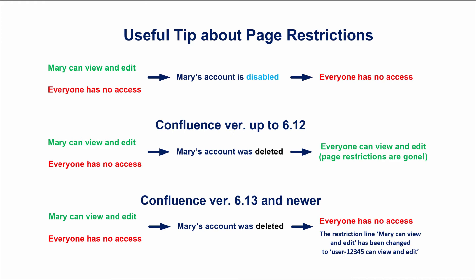If a user is listed as the only person who has access to the page and we disable their account, the page is still restricted and not accessible to anyone. Confluence remembers that such a user exists. In old Confluence versions up to 6.12, if we delete this user, the page restrictions are gone and everybody with appropriate space permissions can access the page.